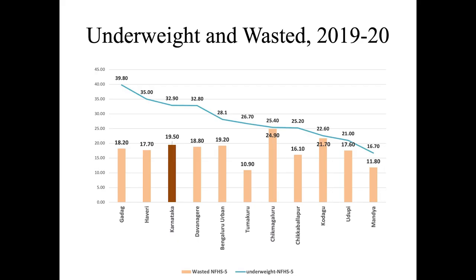Looking at the background nutrition status of the districts, the Karnataka average is marked in red. Two districts stand out as having the most wasted children: Chikkamagaluru and Kodagu. The highest number of underweight children is in Gadag. However, most taluks in our sample are better performing than the Karnataka average.